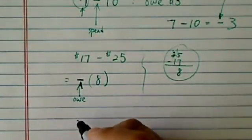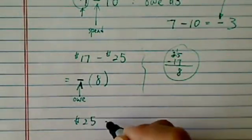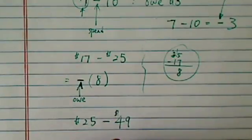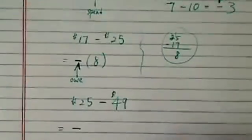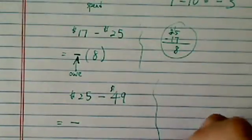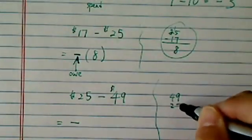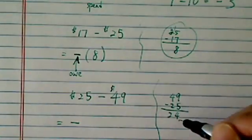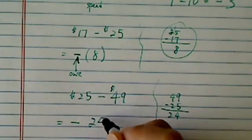So one more example. We have $25, but this time we spend $49. So again, we're going to owe something. We're going to put a minus sign there. And then you do a minus 25 from $49. So you have 24. So we owe $24.